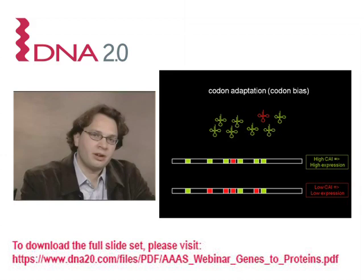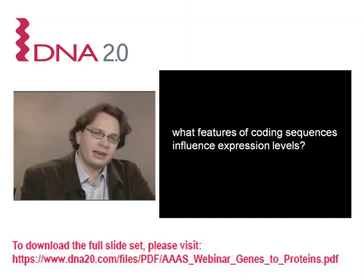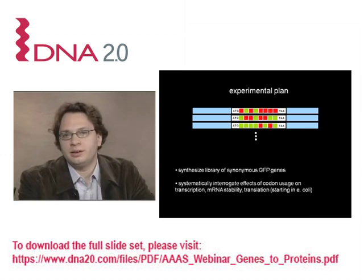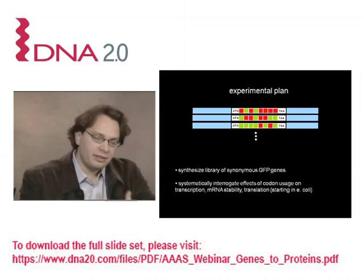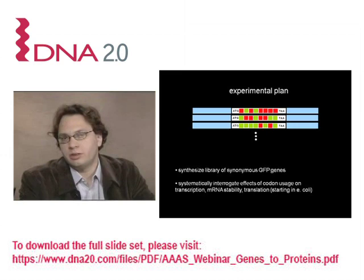There is strong evidentiary support for this classical theory arising principally from tRNA replacement experiments. To test this and many other theories, we wanted to ask in a systematic way what features of coding sequences influence expression levels. Our experimental plan was to synthesize a large library of proteins all encoding the exact same protein — in this case GFP — but with random synonymous mutations introduced in random locations, express these constructs in E. coli, and thereby systematically interrogate how codon usage influences transcription, mRNA stability, translation, and all processes leading to eventual protein synthesis.